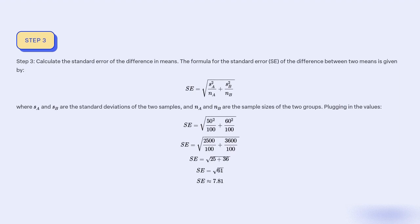Step 3: Calculate the standard error of the difference in means. The formula is S_e equal to square root of (S_A² divided by N_A plus S_B² divided by N_B), where S_A and S_B are the standard deviations and N_A and N_B are the sample sizes. Plugging in the values: S_e equals square root of (2500 divided by 100 plus 3600 divided by 100), which equals square root of (25 plus 36), equals square root of 61, giving S_e equal to 7.81.